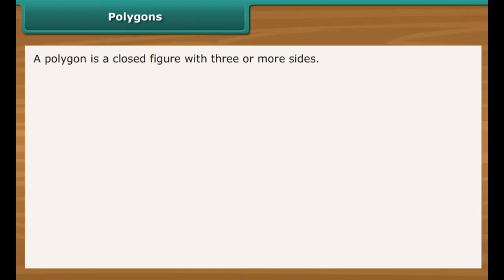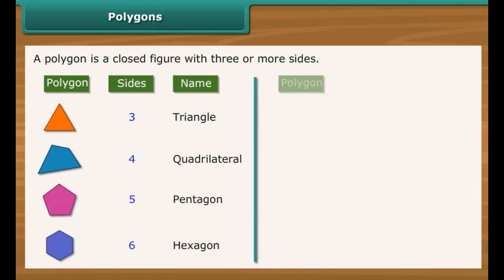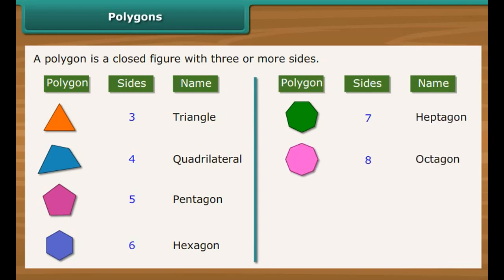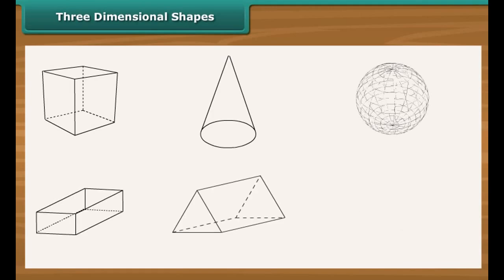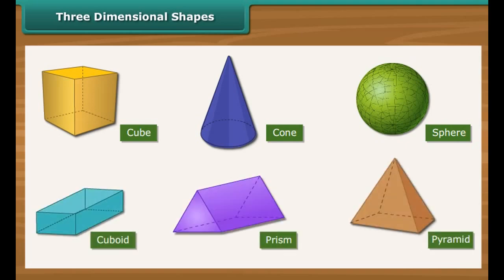Polygons: A polygon is a closed figure with three or more sides. Here are some polygons — let us count their sides and name them. Three-dimensional shapes have depth; they are not flat like two-dimensional shapes. Examples of three-dimensional shapes are: cube, cone, sphere, cuboid, prism, pyramid, etc.